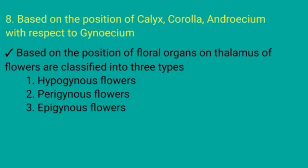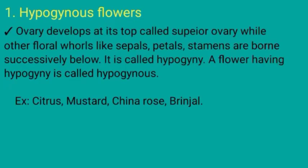The eighth type of classification of flowers is based on the position of Calyx, Corolla, and Androecium with respect to the Gynoecium — which means based on the position of floral organs on the thalamus. Flowers are classified into three types: hypogynous, perigynous, and epigynous. In hypogynous flowers, the ovary develops at the top — called the superior ovary — while other floral organs like Calyx (sepals), Corolla (petals), and Androecium (stamens) are born successively below. This is called hypogyny, and such flowers are called hypogynous flowers.